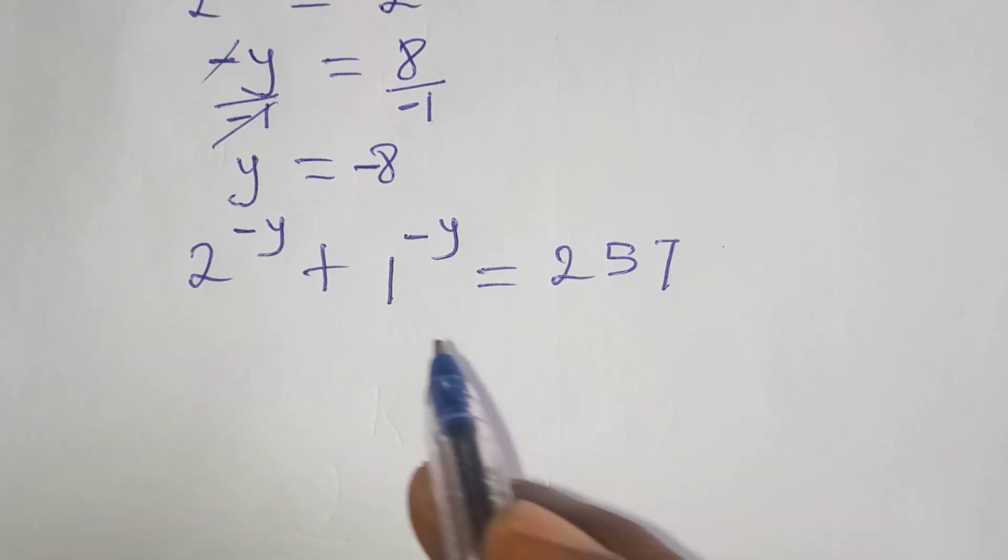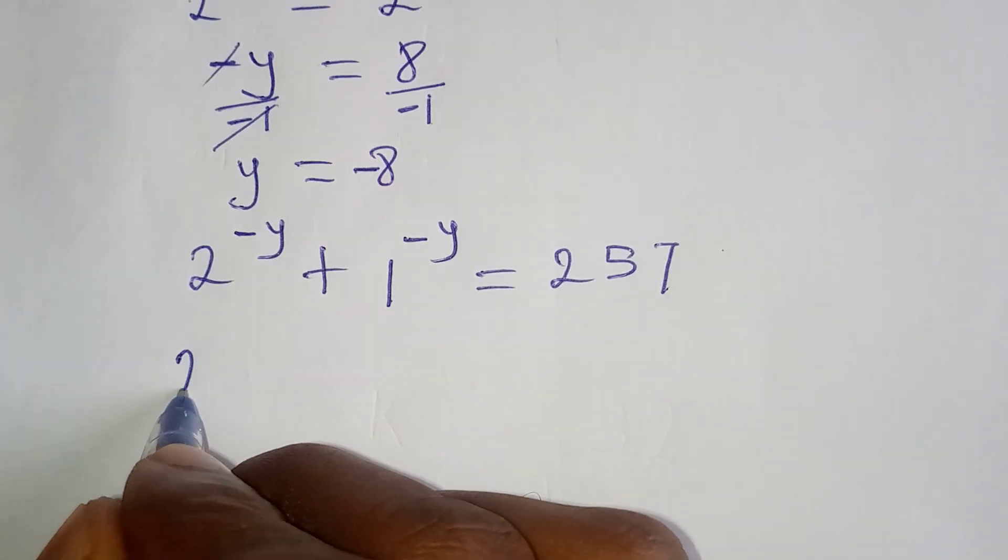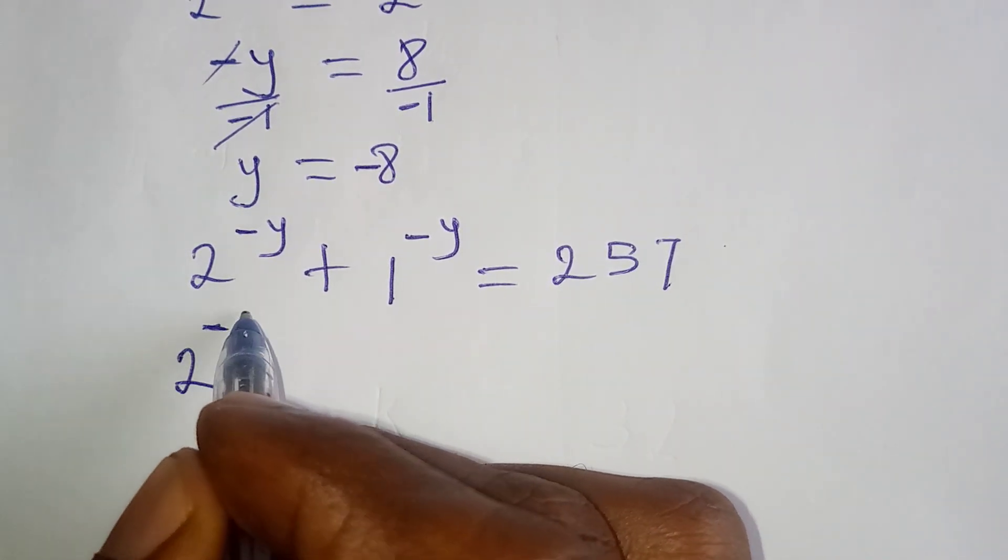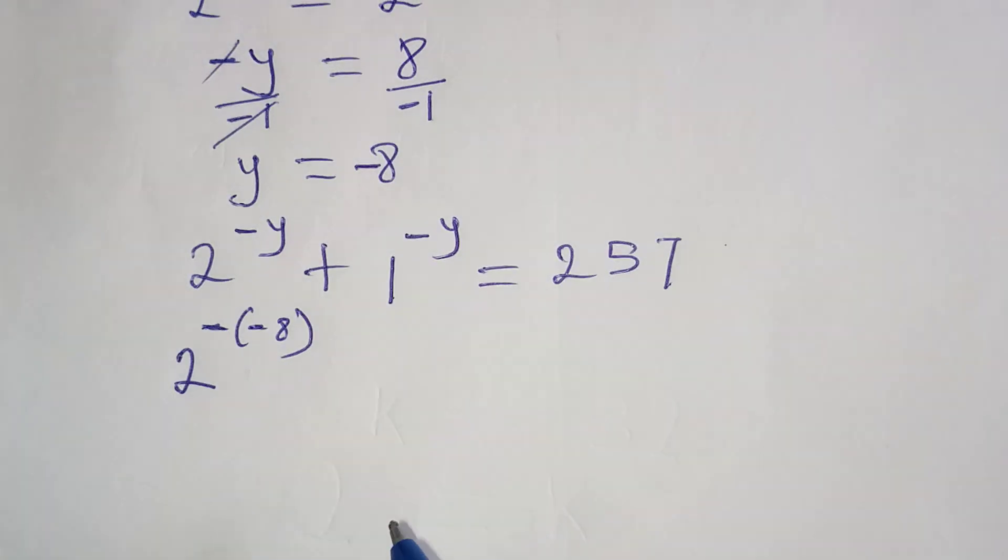But then, let's confirm to be sure we are correct. The original equation is 2 to the power of negative y plus 1 to the power of negative y is equal to 257, right? So we have y to be equal to minus 8, so that means we have 2 to the power of negative negative 8, because y is equal to minus 8.